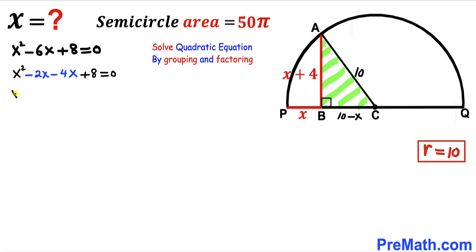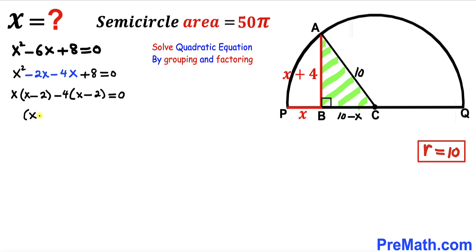Replacing −6x with −2x − 4x, we see x is common in the first two terms and −4 is common in the last two. Factoring out x gives x(x − 2), and factoring out −4 gives −4(x − 2). Since (x − 2) is common, we factor to get (x − 2)(x − 4) = 0.